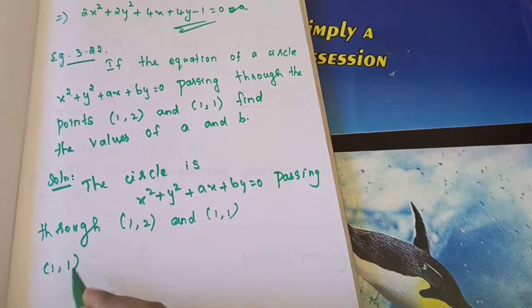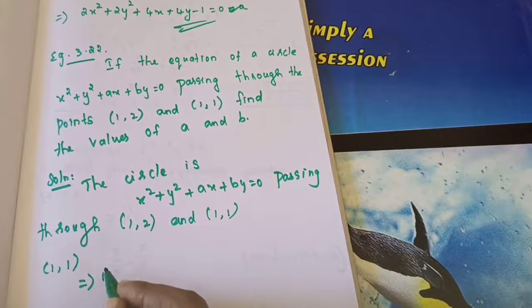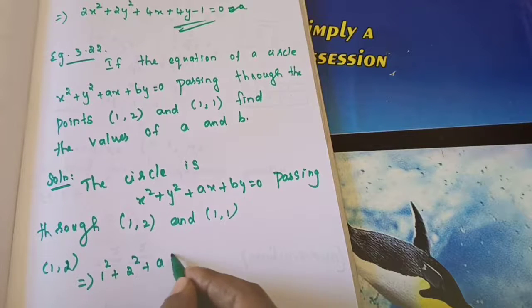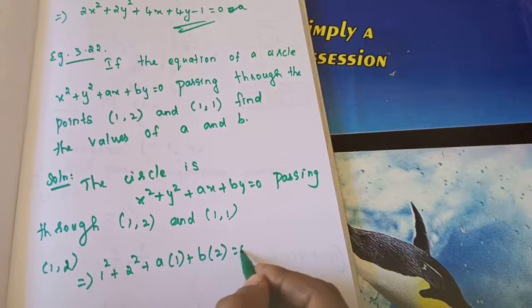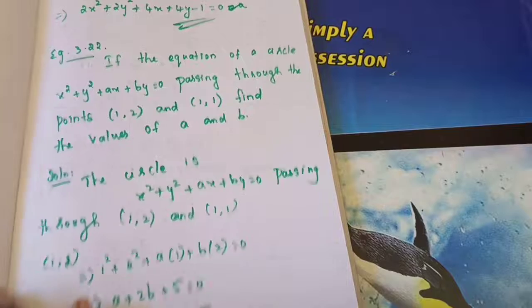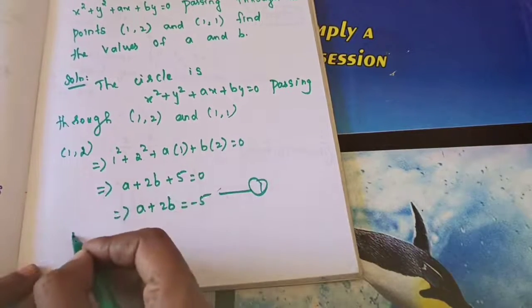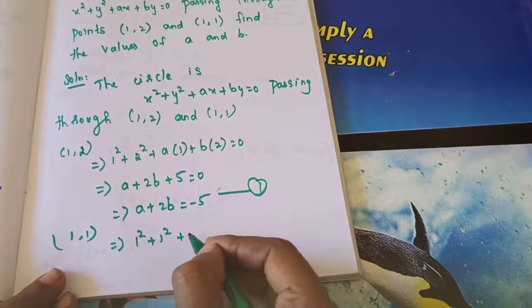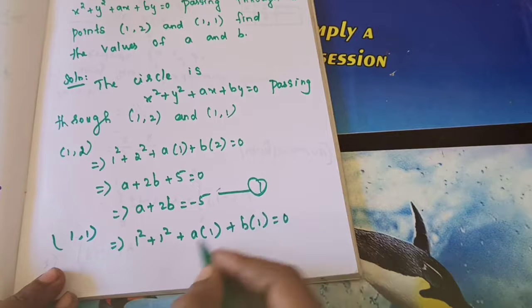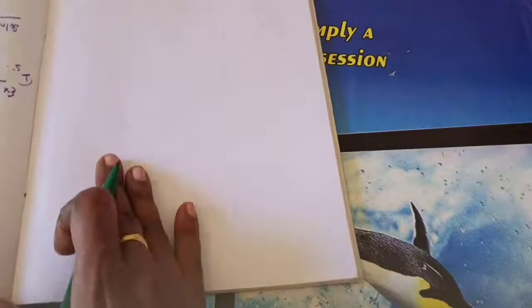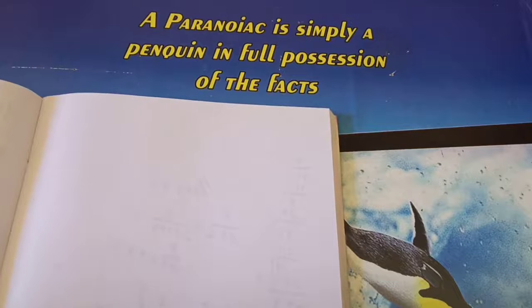Substituting point (1, 2): 1 square plus 2 square plus A into 1 plus B into 2 equals 0, giving A plus 2B plus 5 equals 0, so A plus 2B equals minus 5 — call this equation 1. Substituting point (1, 1): 1 square plus 1 square plus A into 1 plus B into 1 equals 0, giving A plus B equals minus 2 — call this equation 2.